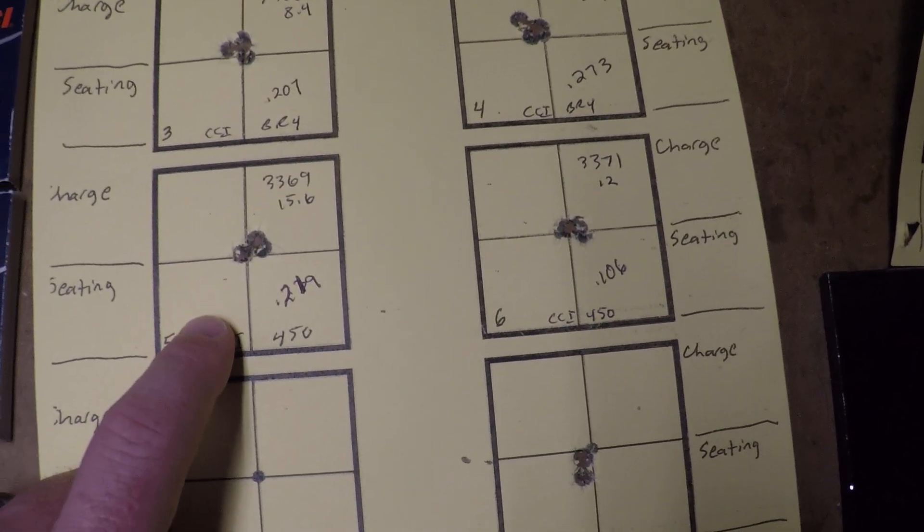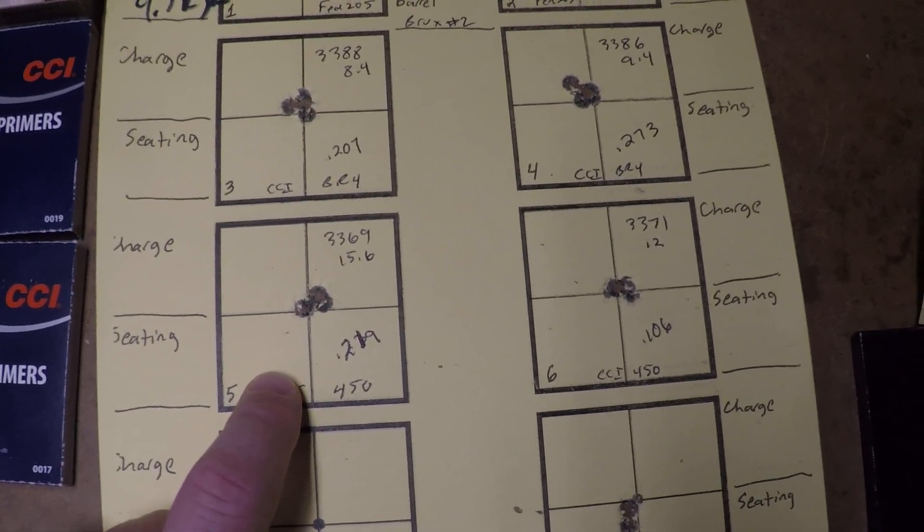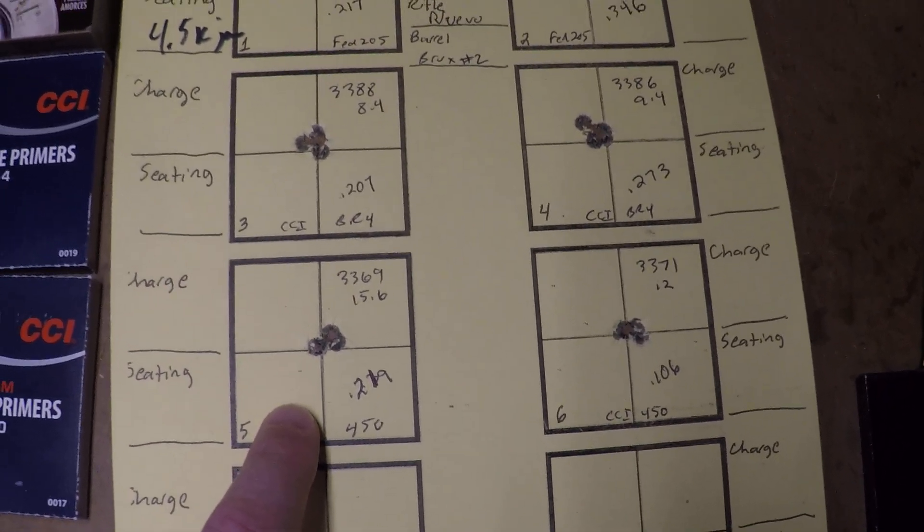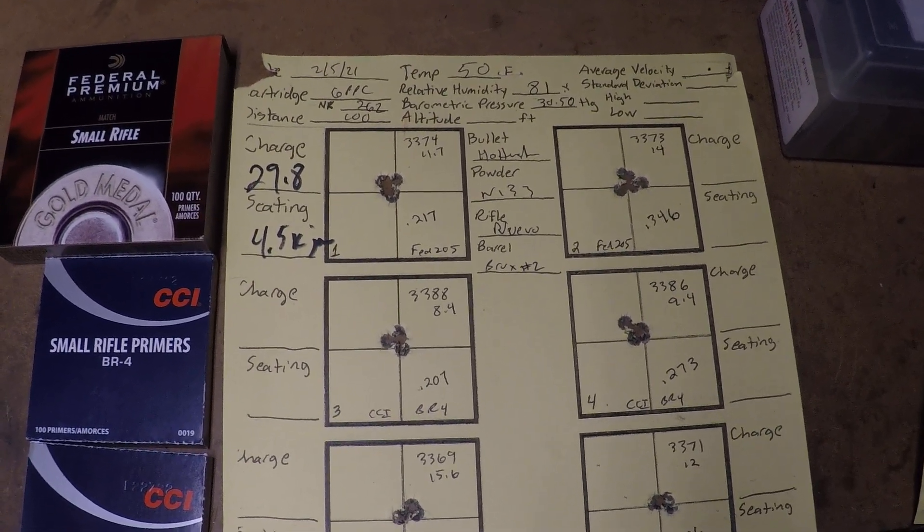So, it seems like, in general, the group sizes could vary based on what primer you're using.